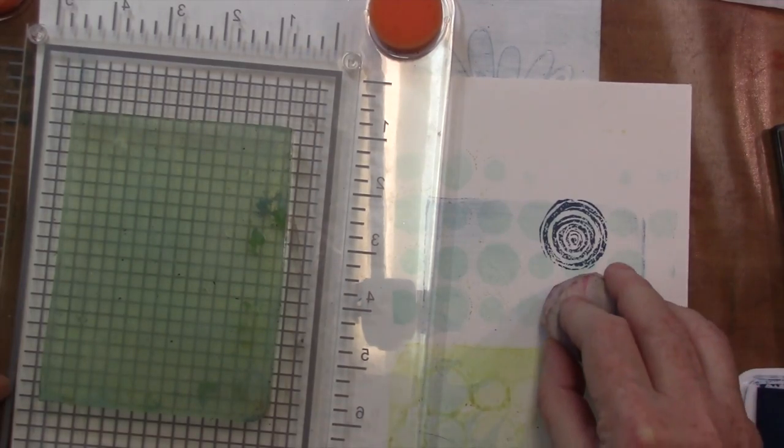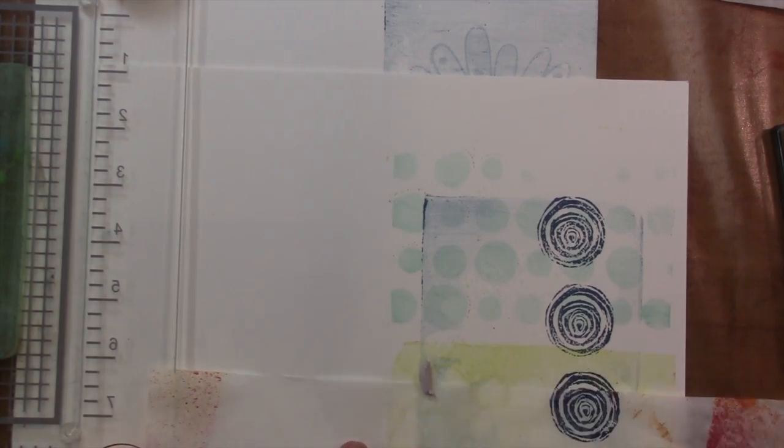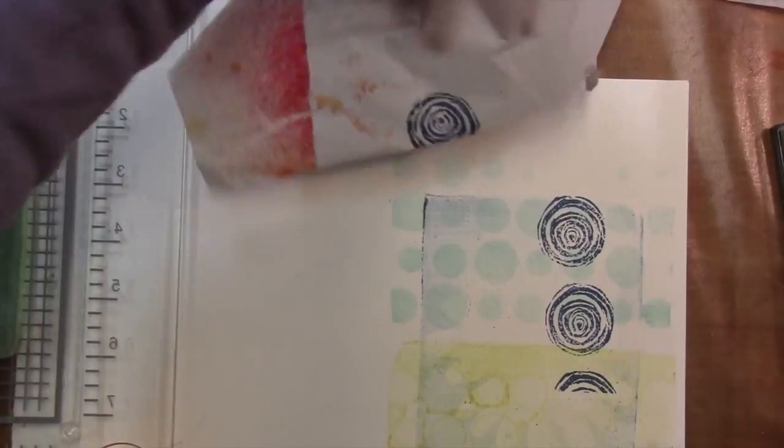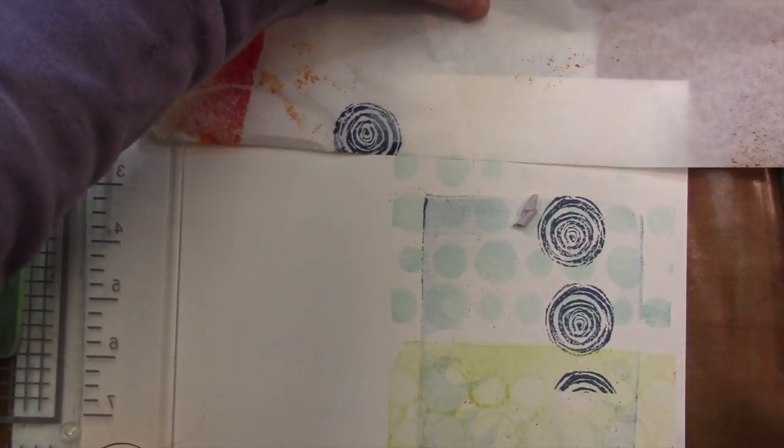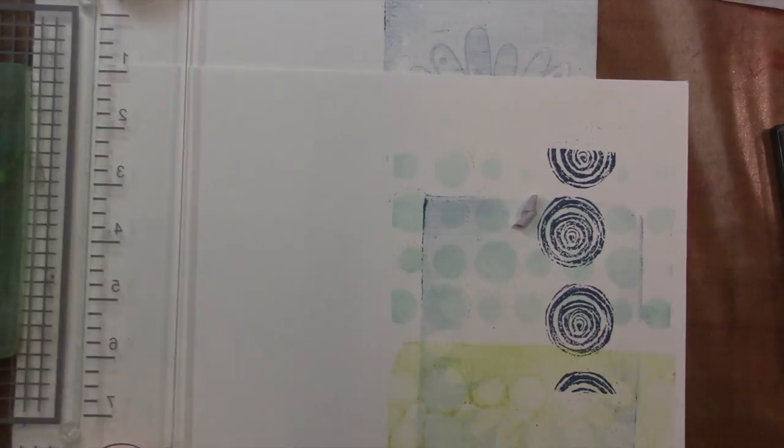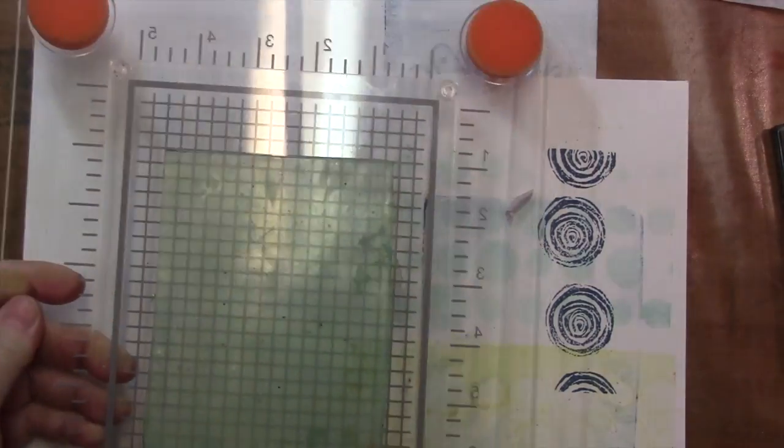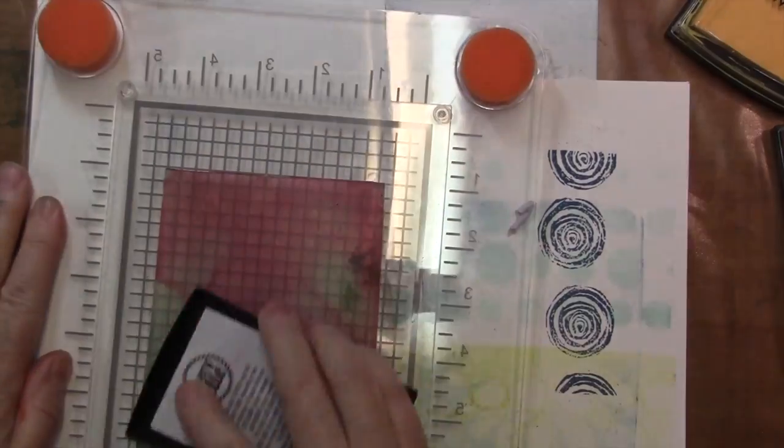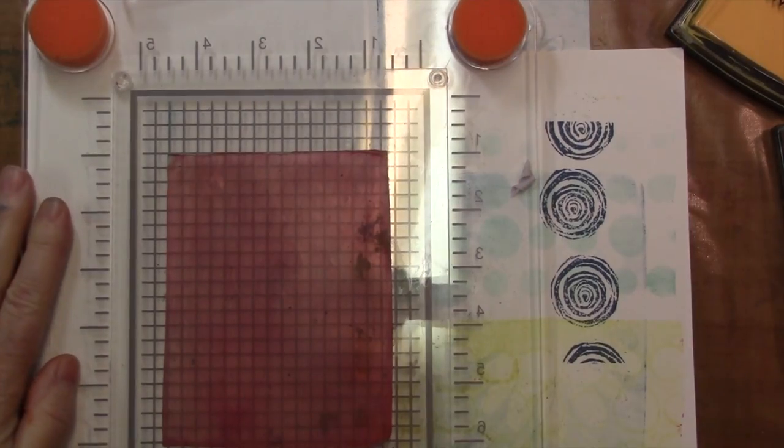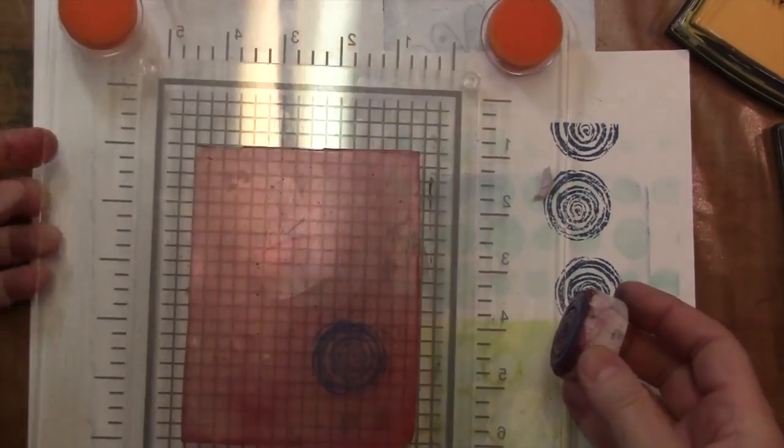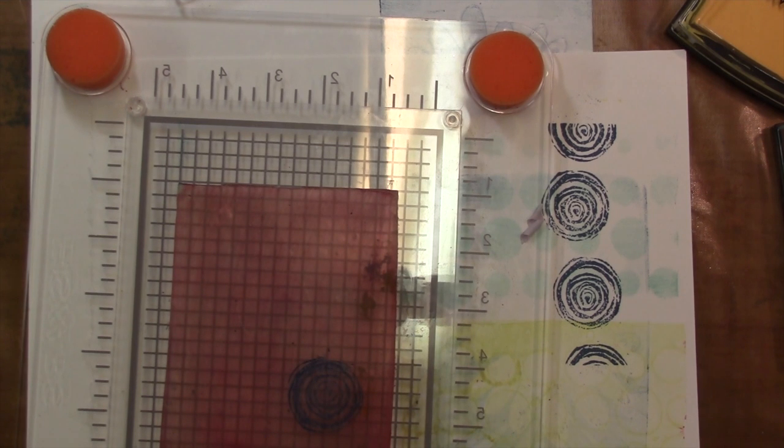And I just ink up the plate, lay the stencil on it, stamp, peel the stencil back and stamp again. So it's a simple process, not a lot of cleanup required afterwards, which I like that. I like being able to do these things pretty quickly.